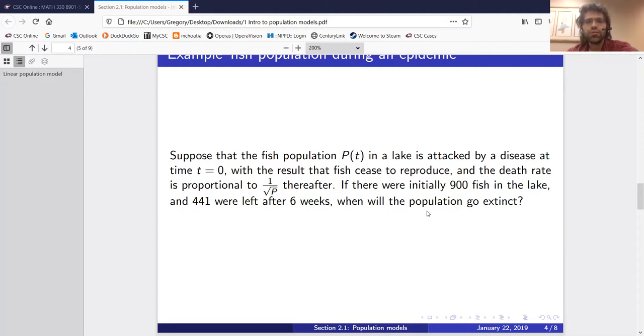Now, this example certainly has very little to do with real life ecology and real life disease dynamics. I mean, first of all, what is this lake where we can perfectly count the number of fish? What is this disease that results in a death rate exactly proportional to one over the square root of P? I mean, this isn't a real example.